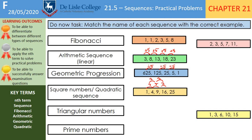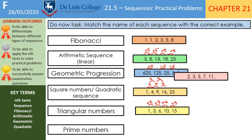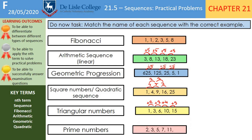Our triangular numbers should be 1, 3, 6, 10, and 15. It's particularly noticeable — you're adding 2, then adding 3, then adding 4, then adding 5. You can see a pattern of adding consecutive numbers. And then your prime numbers must be whatever's left — numbers that have two factors, one and itself. We should remember from last lesson that 2 is the only even prime number.